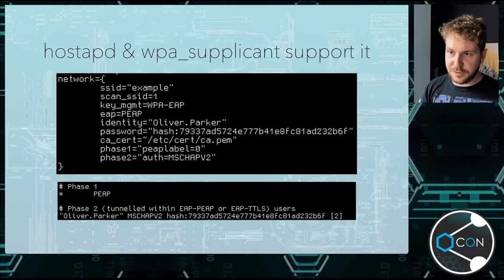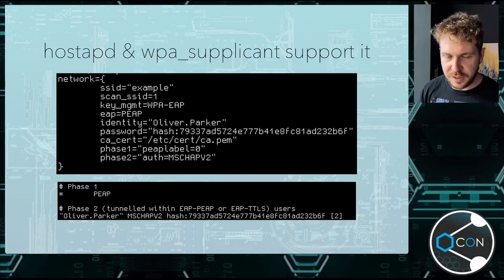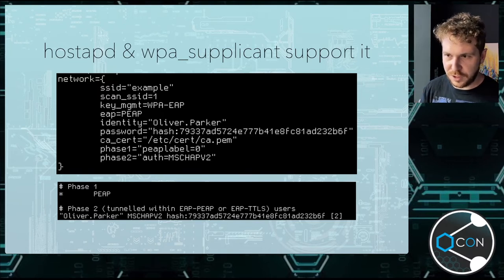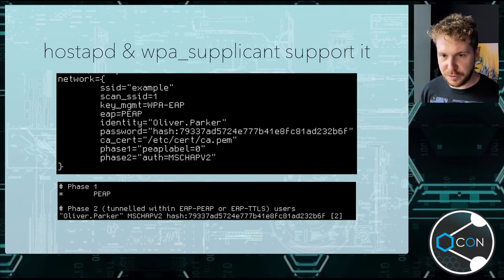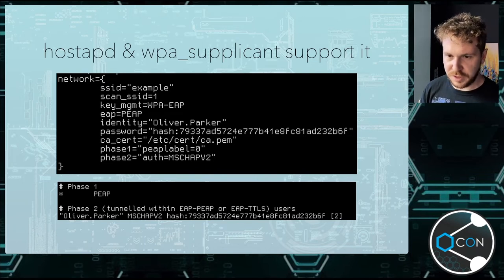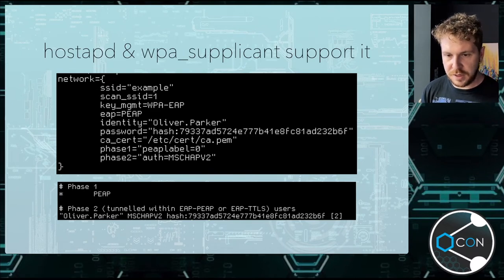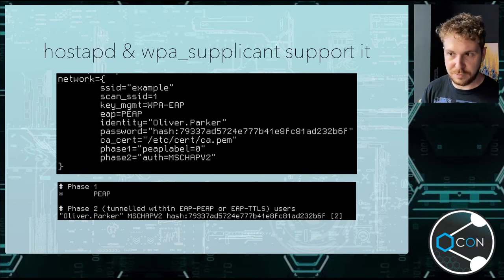So I went researching. HOSTAPD and WPA supplicant both support this. You can see in these example configs I've provided - the main difference is you just prepend 'hash:' and then give it the hash in both cases. In the supplicant case, your password equals 'hash:' and then the hash. And in the EAP user file case for hostAPD, where you would usually put the password, you just say 'hash:' colon.